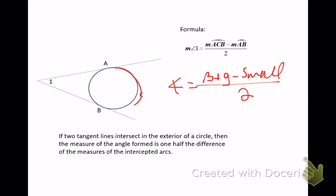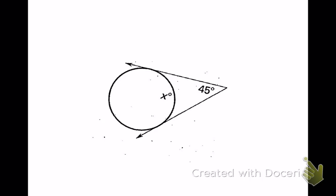The big arc is here and the small arc is here. Two tangents, by the way they're set up, just cut the circle into two arcs. There are a lot of ways we can find this angle and a lot of different ways problems can be set up. I believe the big arc in this example is 235, and we can use the formula of big minus small divided by 2.